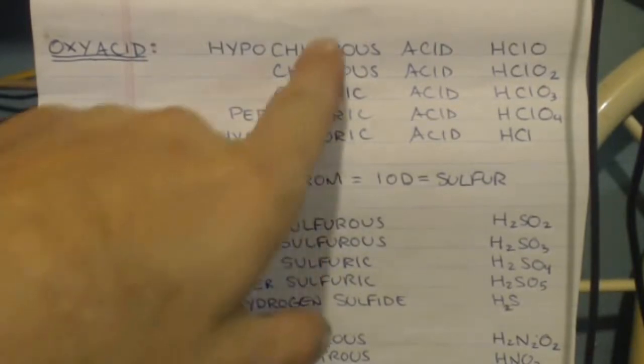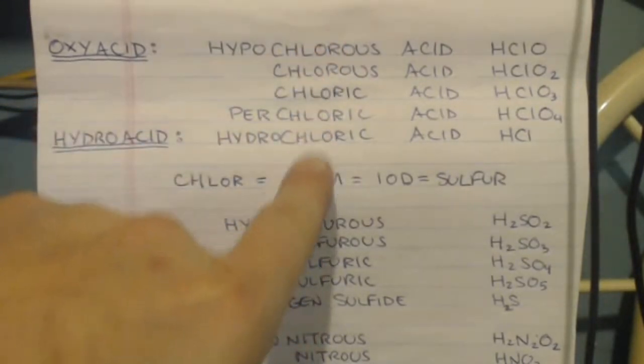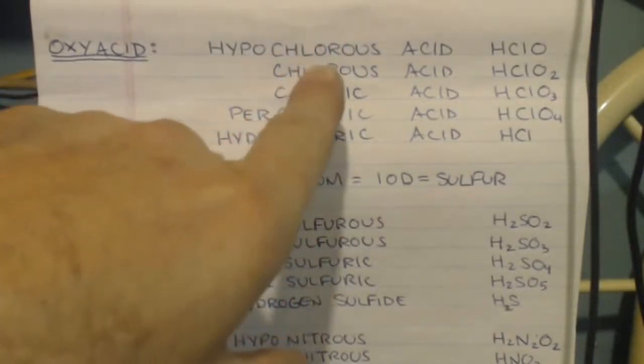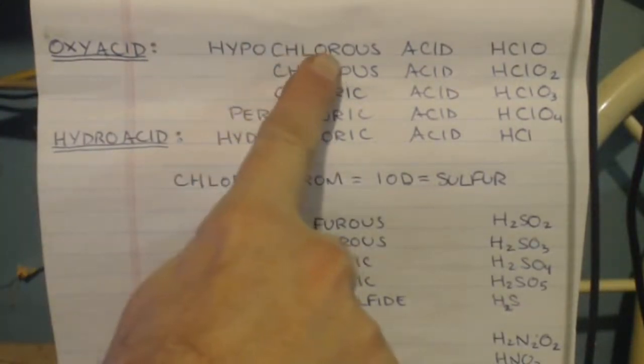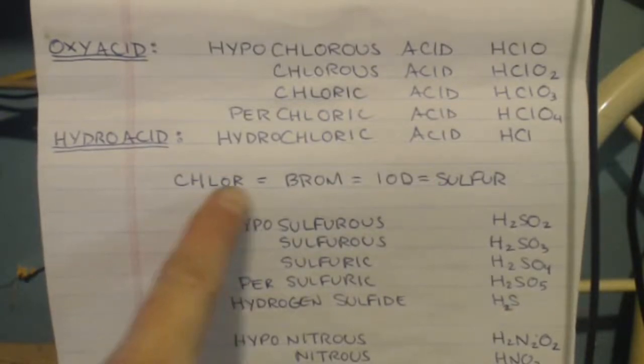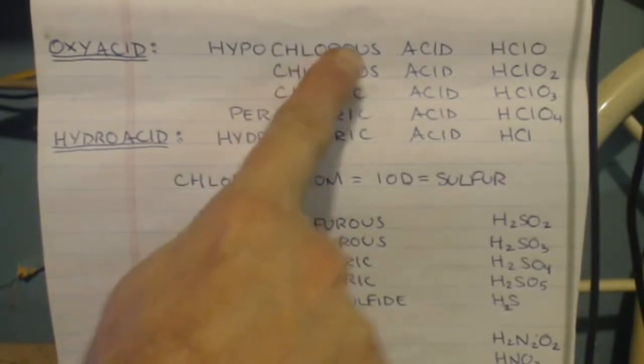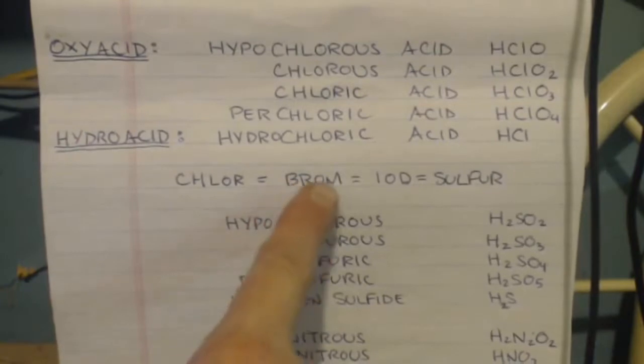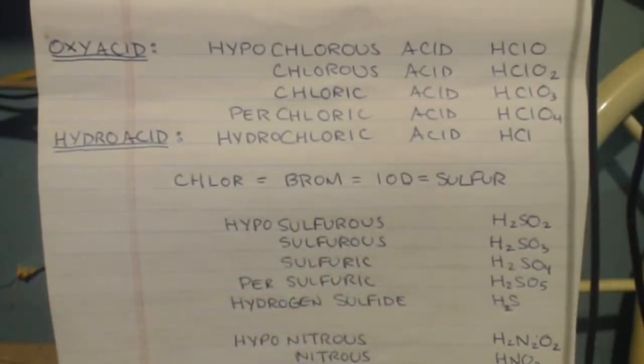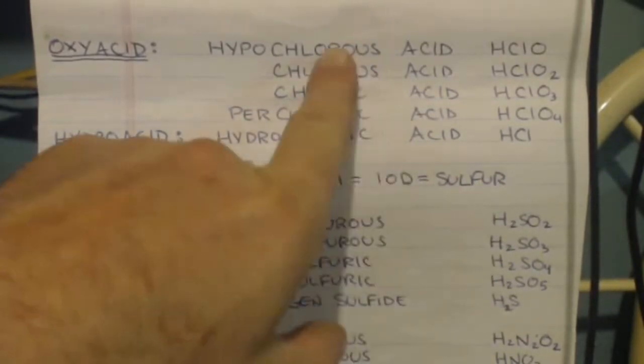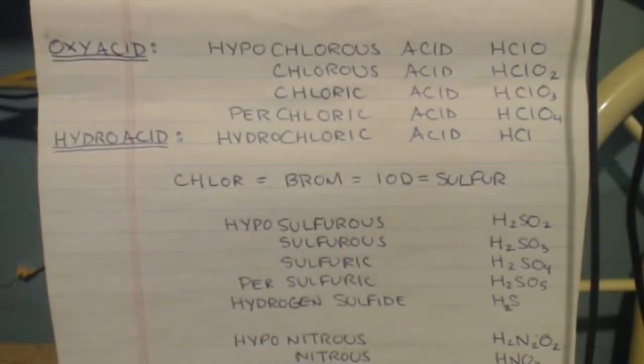Look at the next example. And also, all you have to do, if this is iodine or bromine instead of chlorine, you just take the CHLO out of there. You take that out and you put B-R-O-M for bromine. If it's iodine, you put I-O-D for it. If it's sulfur, you put sulfur for it. It's that simple. And I want you to show it.